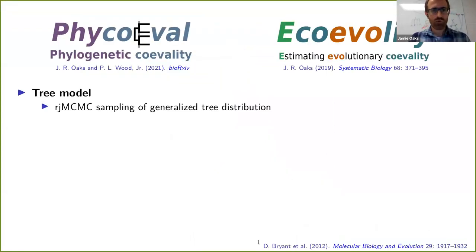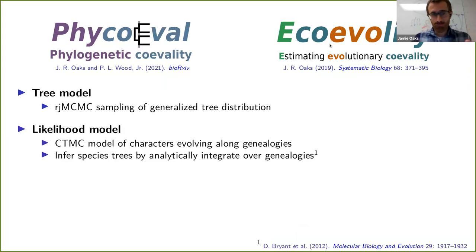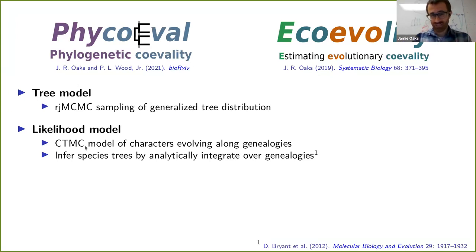We implemented this generalized tree distribution and the Bayesian machinery for sampling it in a new tool called FiCoEvil, which is part of the EcoEvolity software package. We couple this generalized tree distribution with a likelihood — again thanks to David Bryant and colleagues — that allows us to integrate over all gene trees when we calculate the likelihood. The tree model is completely independent from the likelihood, so this could be coupled with any likelihood function that calculates the probability of any type of data on a tree. It's a truly general approach.